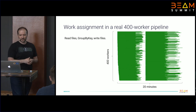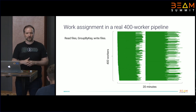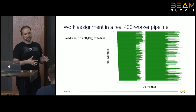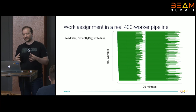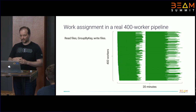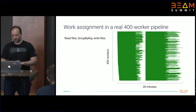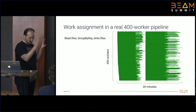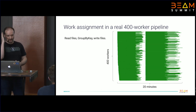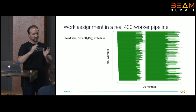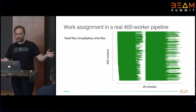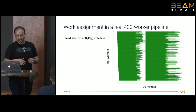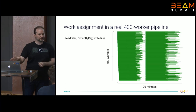Here is a Gantt chart of a real 400-worker pipeline processing a simple three-stage pipeline. The first stage is reading from files. The second stage is grouping data elements by key, and then writing out files to GCS. The execution is very stage-specific: you have a read stage, then a synchronization point where grouping starts, then a write stage. The duration is basically the maximum execution time of a worker across stages. There is a lot of white space in this diagram — lots of optimization opportunities.